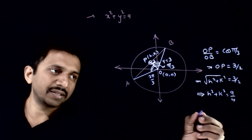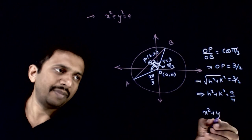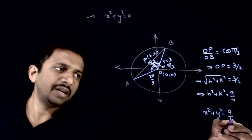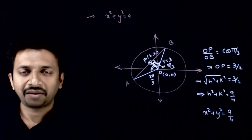Hence the equation of locus is x square plus y square is equal to 9 by 4. Thank you.